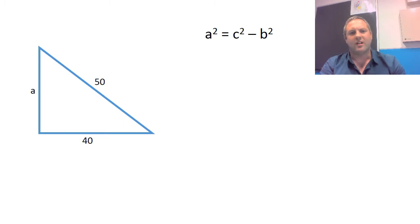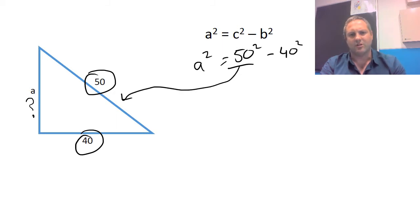Alright, so here's another example. So in this case, we know what C is, and we know what B is. We're going to actually look for A. So we're going to set it up as we've seen. So we've got A squared equals 50 squared minus 40 squared. The big number has to go for this. This represents the hypotenuse. So hypotenuse is always first when you're looking for A or looking for B.